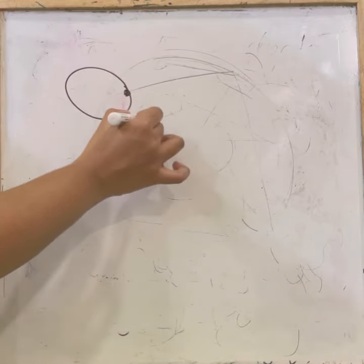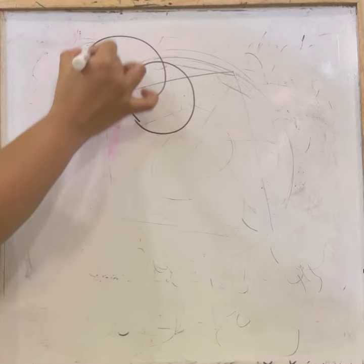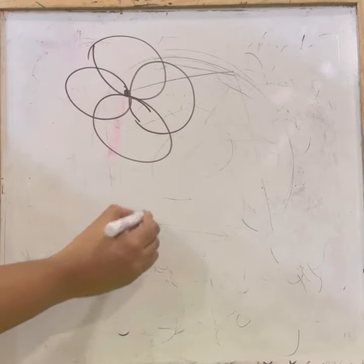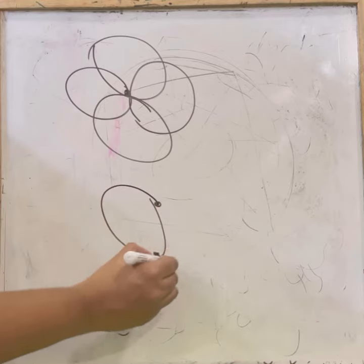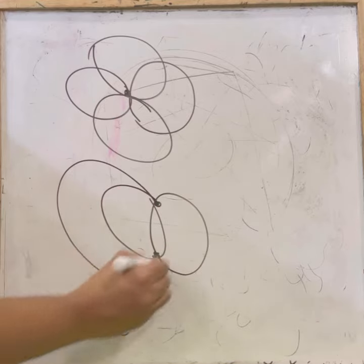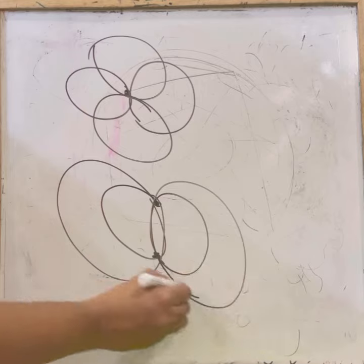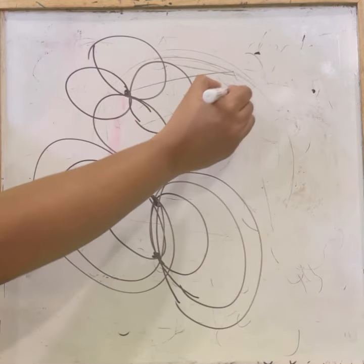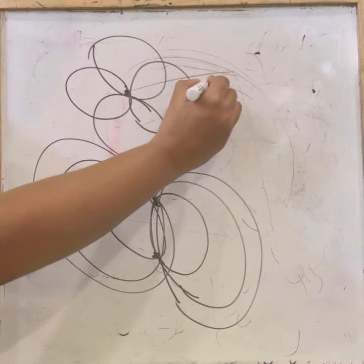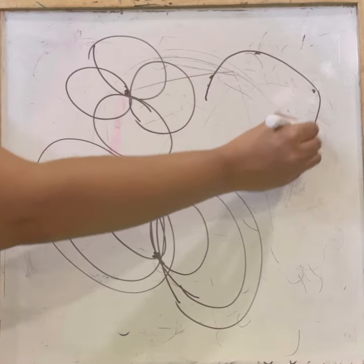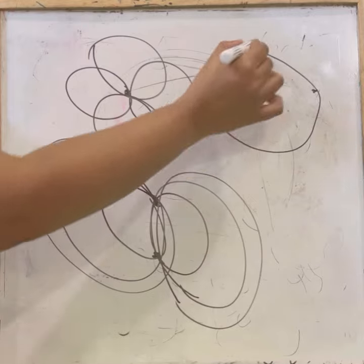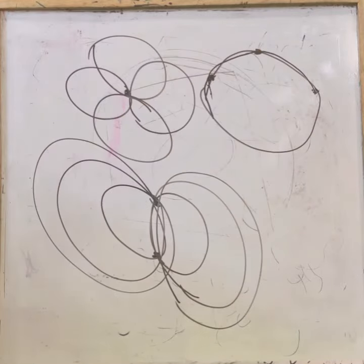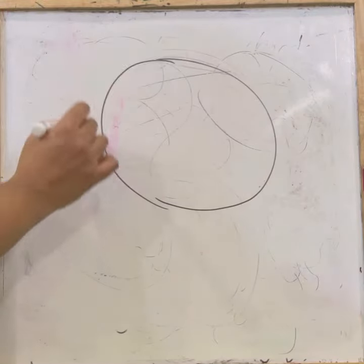Next, let us check how many circles can pass through a given number of points. Through a single point, infinitely many circles can pass. Through two points, also infinitely many circles can pass. Through three distinct non-collinear points, only one unique circle can pass.